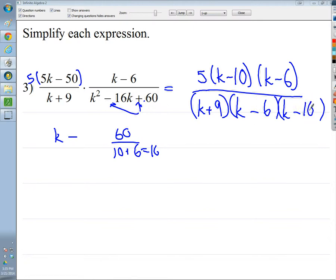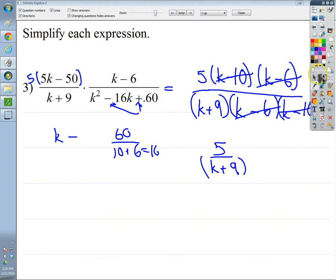Now I just look to see if they have anything on top and the bottom that are the same. They have these, they have these. So what I'm left with is 5 over k plus 9. And a lot of times, if you just have one of those little setups, you don't have to worry about the parentheses around k plus 9. See, not a big deal.